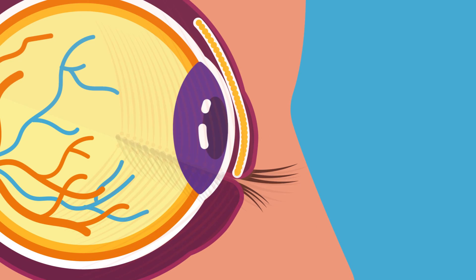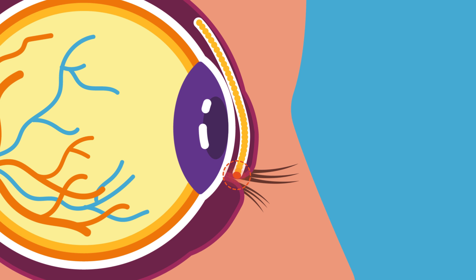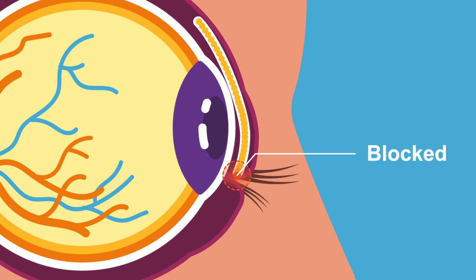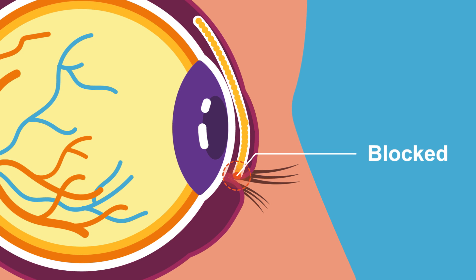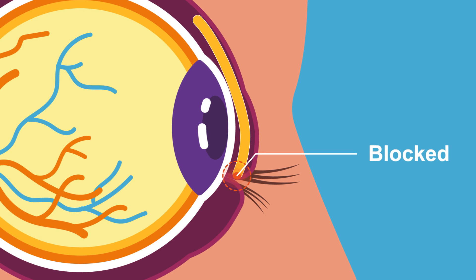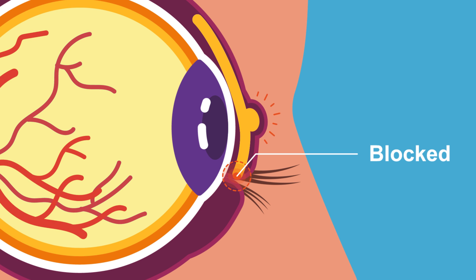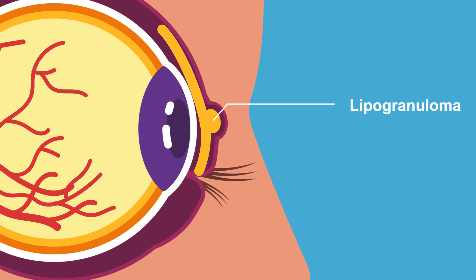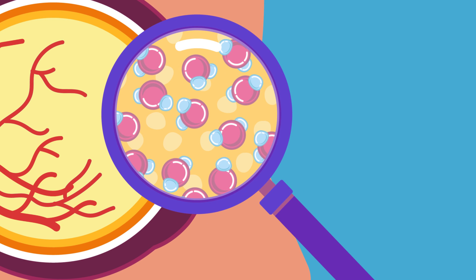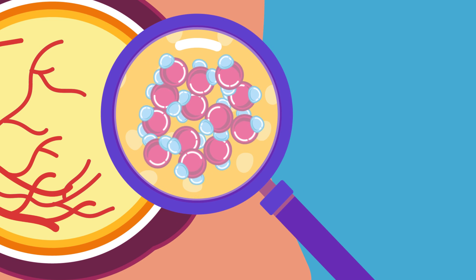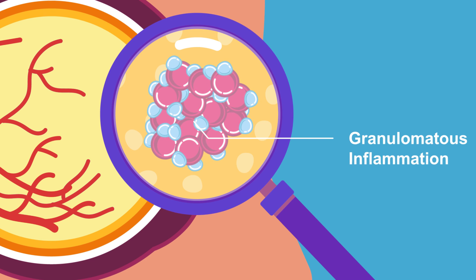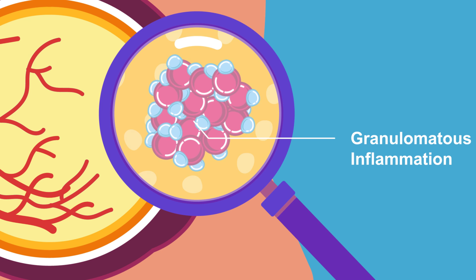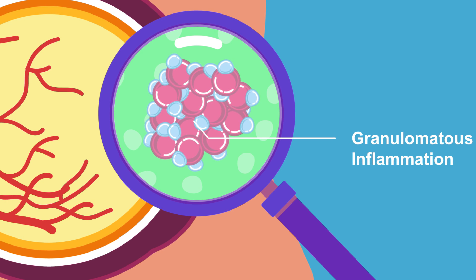If these meibomian gland orifices at the lid margin become plugged or blocked, the contents of the glands — meibum — start getting released into the tarsal plate and surrounding eyelid soft tissue, causing an inflammatory reaction. It is also called lipogranuloma because the retained lipid secretions are causing aggregation of certain cells, causing this granulomatous inflammation. It is sterile inflammation as there are no microorganisms causing infection.